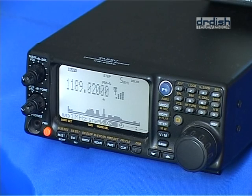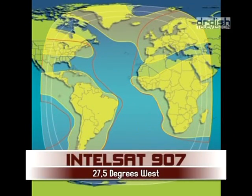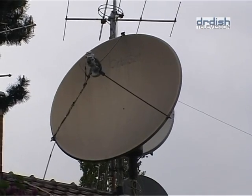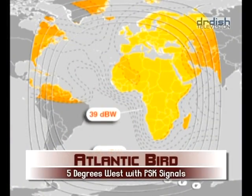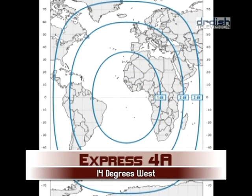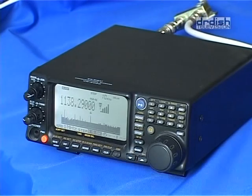Where do we find SCPC signals? Intelsat 1002 is your first choice, because it's easy to find. This satellite is followed by Intelsat 907 at 27.5 degrees west. Then there are the Inmarsat C-band Atlantic Bird on 5 degrees west, primarily with PSK signals, and the Express 4A at 14 degrees west. This ought to be enough for starters. If you feel you need more traffic, then you don't want to miss our upcoming feature story about FDM signals.